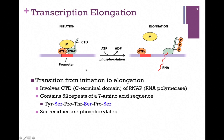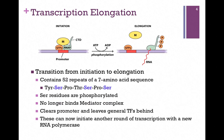On the C-terminal domain of RNA polymerase, there are 52 repeats of a 7-amino acid sequence that includes 3 serine residues. You do not need to know these 7 amino acids, only that there is a high number of serine residues. These serine residues are phosphorylated. With 3 serines in each of these 7-amino acid sequences and 52 repeats of them, there are multiple places for the C-terminal domain of RNA polymerase to be phosphorylated.